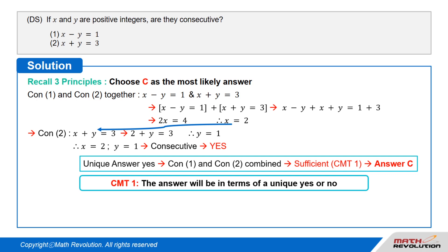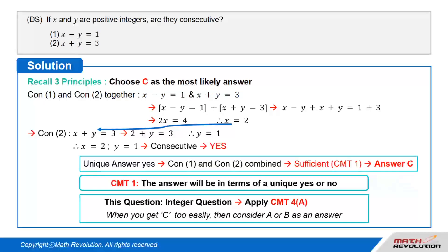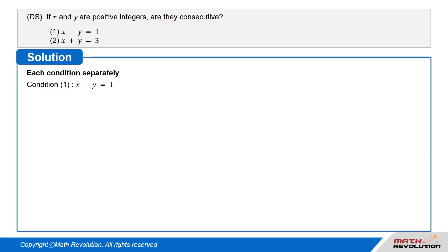And since the answer is unique, both conditions combined are sufficient according to CMT 1, which means that the answer will be in terms of a unique yes or no. Thus, C seems to be the answer. However, since this is an integer question, we should apply CMT4A, which states if you get C as an answer too easily, then consider A or B as an answer. So, we have to consider each condition separately.